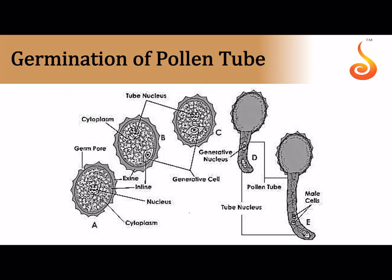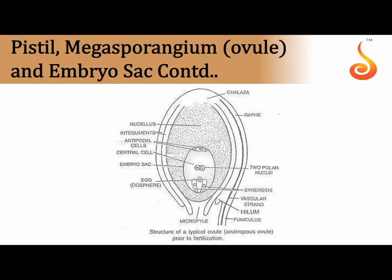Once the pollen tube is formed, the generative cell becomes spindle-shaped and floats in the cytoplasm of the vegetative cell. When the pollen falls onto a stigma, the pollen tube germinates from the germ pore, led by the vegetative cell nucleus. The generative cell then divides into two spherical non-motile male gametes which are passed down the pollen tube as it travels through the tissue of the style towards the ovule.